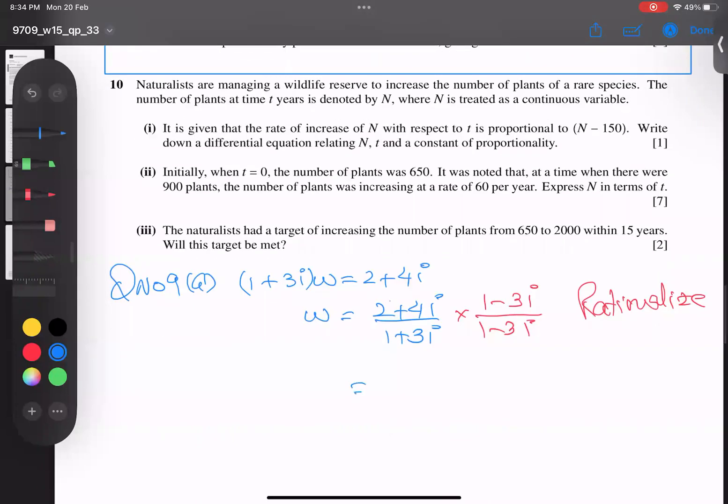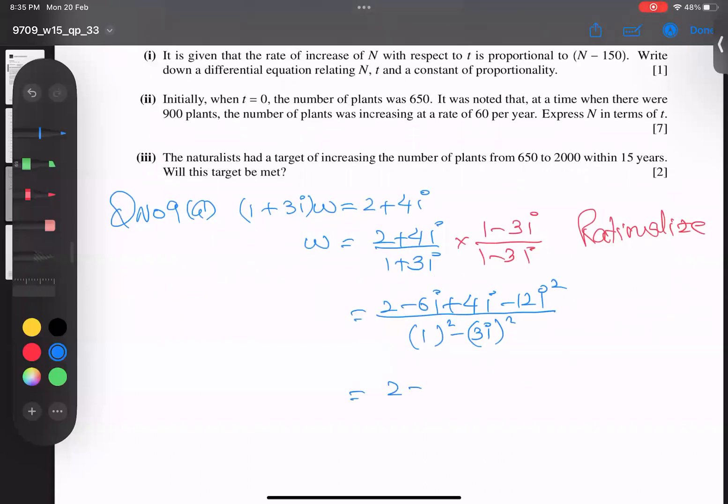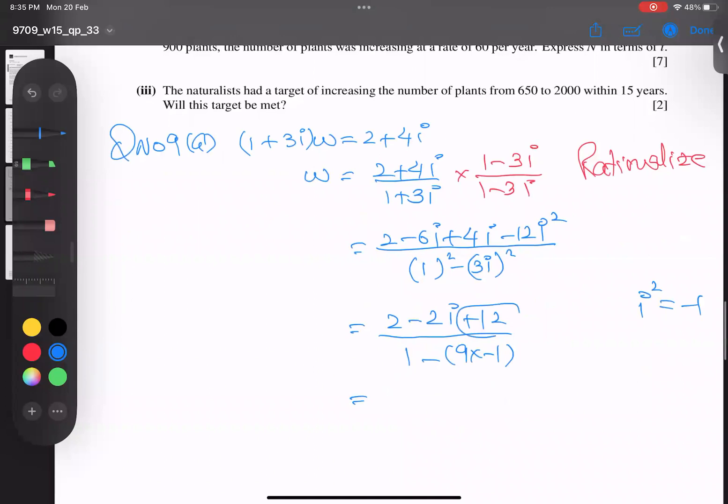So 2(1) - 2(3i) + 4i + 4(3)i² divided by (1)² - (3i)². That's 2 - 6i + 4i + 12i². Down below, applying a² - b² property: 1 - 9i². These values simplify to -2i and i² equals -1, so it's -(-12) = +12. Below: 1 - 9(-1) = 10.